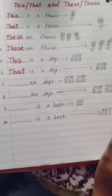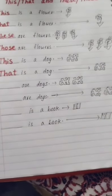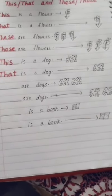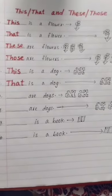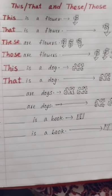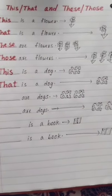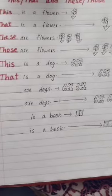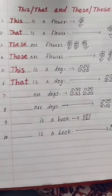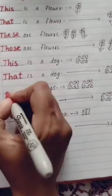Seventh example: blank are dogs. The dogs are near. There are two dogs. Two dogs means plural, so we have to use 'these' — these are dogs.